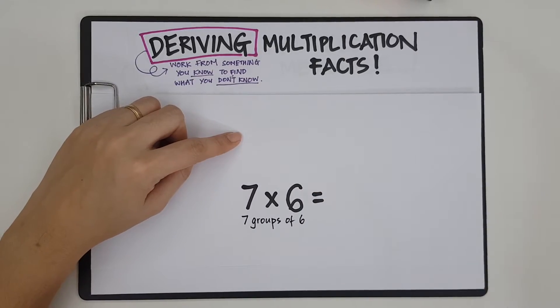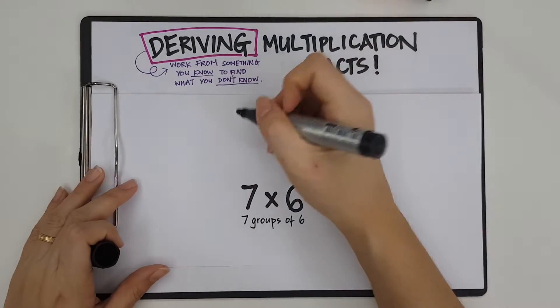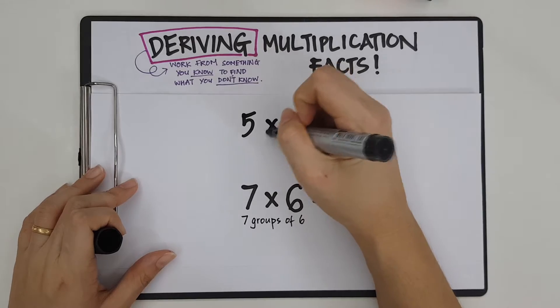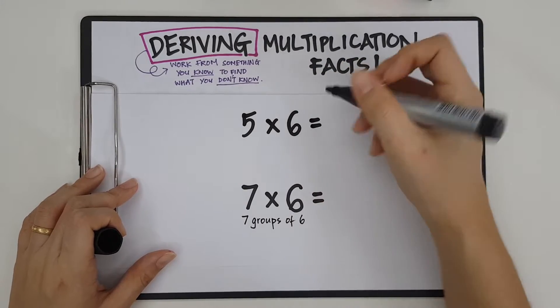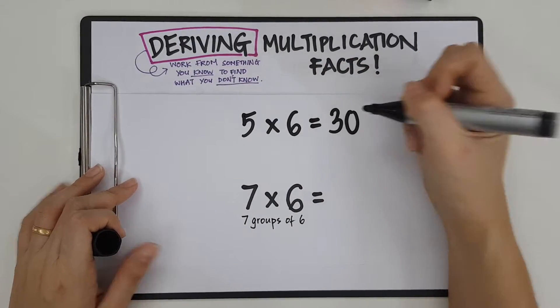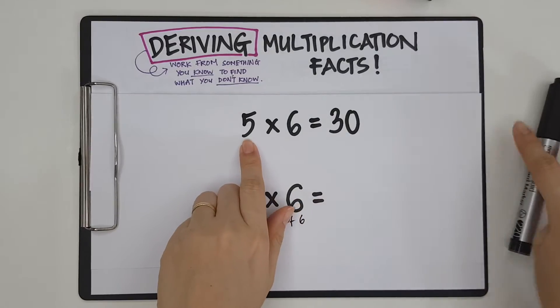How about 5 groups of 6? Now, I like 5 groups of 6 because it is my 5 times table. And everybody knows 5 times 6 is 30. Okay? Because skip counting in 5 is easy.